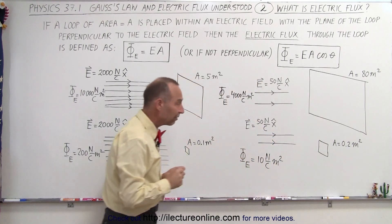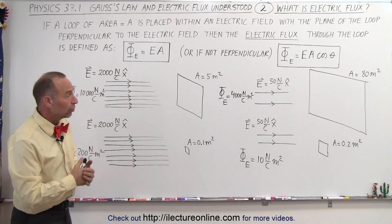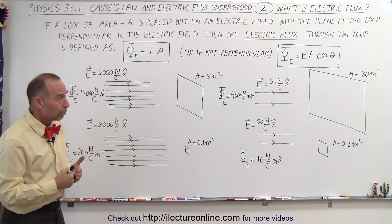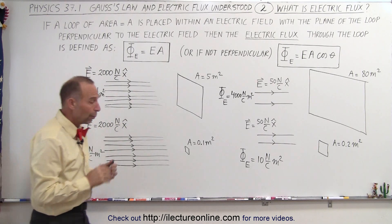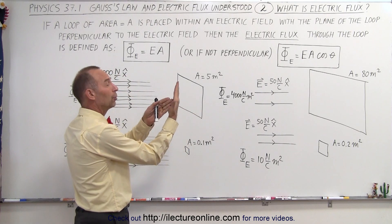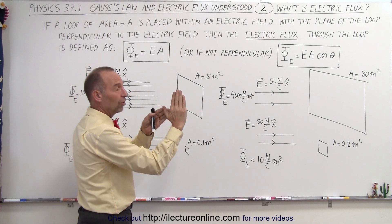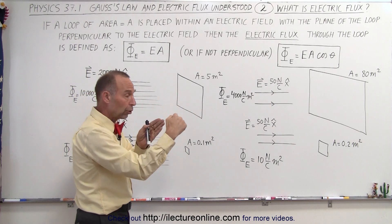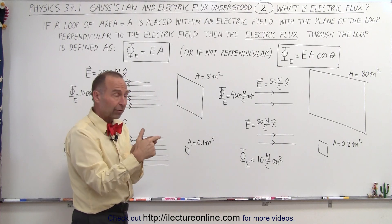So you can see it really depends upon the strength or magnitude of the electric field and the size of the loop. Now also, what happens if we take the loop and turn it 90 degrees in such a way that the perpendicular to the loop is perpendicular to the electric field?